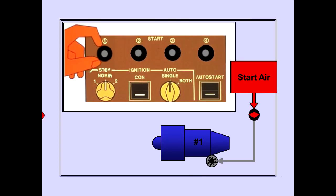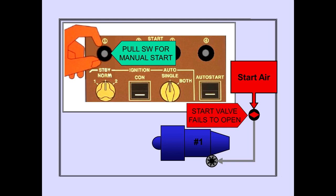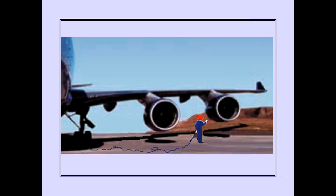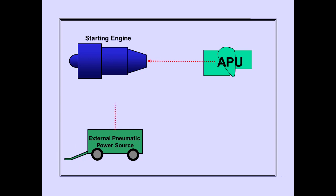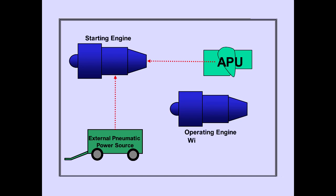If the start valve does not open during start, a manual override start may be required. During a manual override start, the malfunctioning valve is opened and closed by the ground crew while in close communication with the flight crew. If the start air sources do not provide sufficient air pressure, a cross-bleed start may be desired. Setting at least 70% N2 RPM on an operating engine should ensure sufficient duct pressure for start.